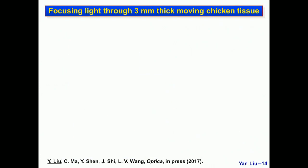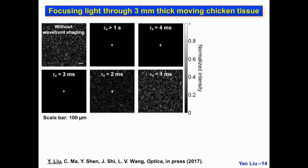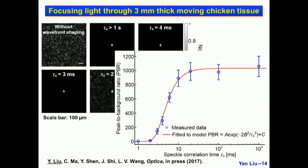We focus light through three millimeter thick chicken tissue, moving it at different speeds to control the speckle correlation time observed on the phase conjugate mirror. Images show the focus achieved at different speckle correlation times. Even when the speckle correlation time is 2 milliseconds, we can still observe a focus. Without wavefront shaping, no focus is seen. By plotting the peak-to-background ratio as a function of speckle correlation time and fitting the experimental data to a theoretical model, we obtain the time constant b — the speckle correlation time when peak-to-background ratio reduces to 1/e² of the static value. This defines an actual system latency of three milliseconds in our case.